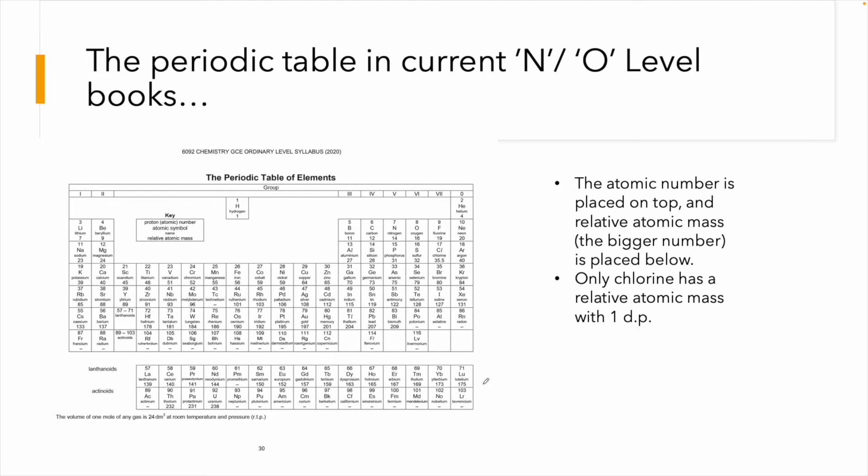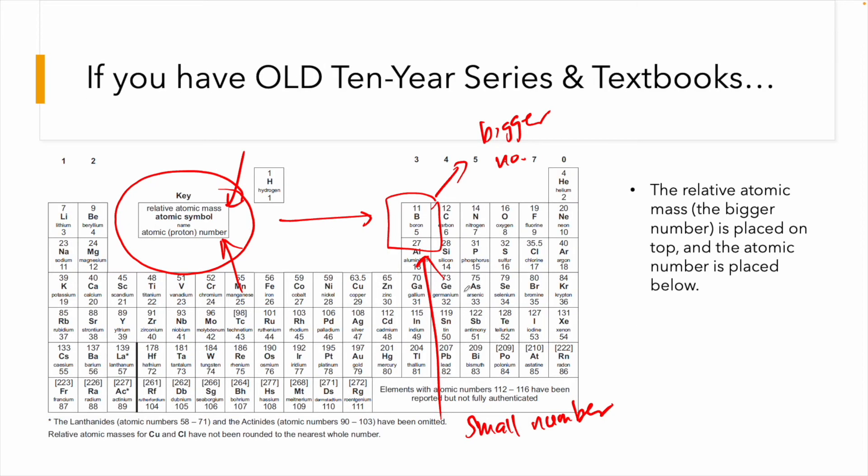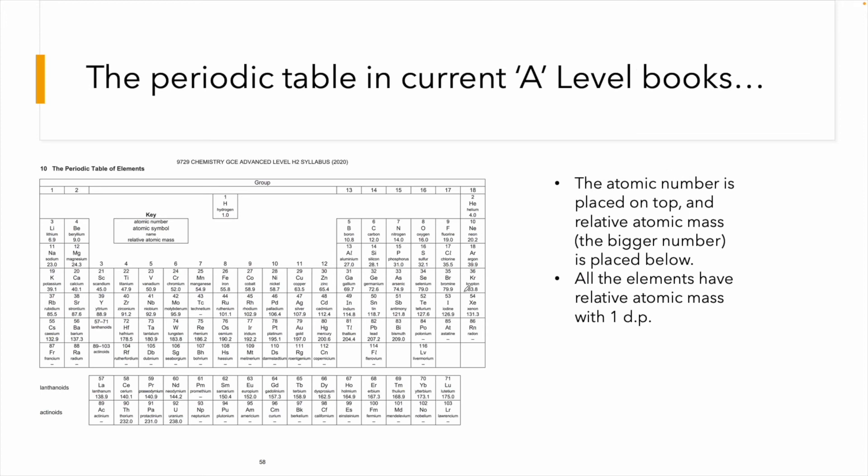So look at this, you will have the relative atomic mass on top and then the atomic number below, which means if you look at it here, the bigger number is on top and then the smaller number is below. Then now you will see a periodic table like this. It is very much similar to the earlier one that you saw, but there's a slight difference. So the atomic number is on top and your mass number or your atomic mass is actually below.